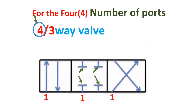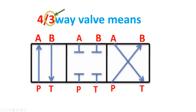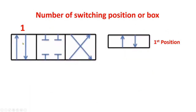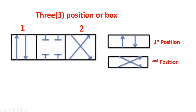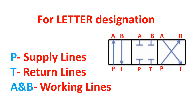This is a four-three-way directional control valve. The four means the number of ports, and the three means the number of switching positions or boxes. Port number one, port number two, port number three, and port number four. The three switching positions are position one, position two, and position three. For letter designation: P means supply lines, T means return lines, A and B are working lines. The symbol also includes a solenoid with return spring.